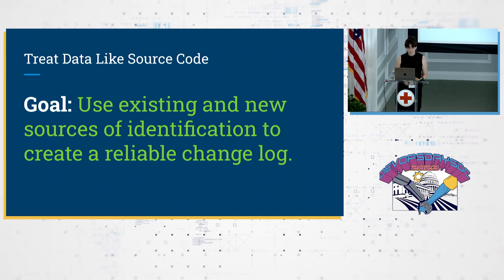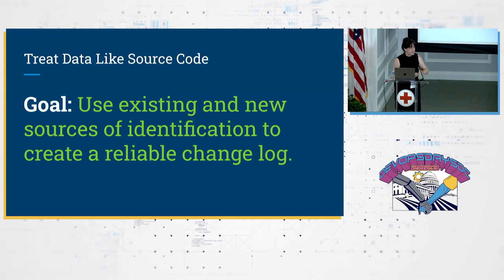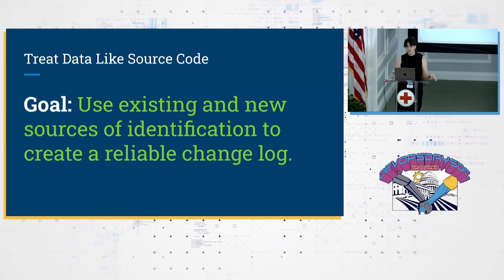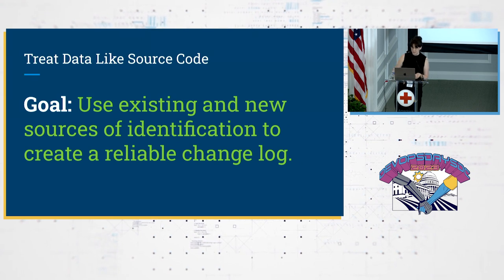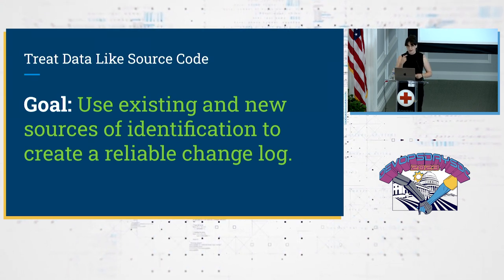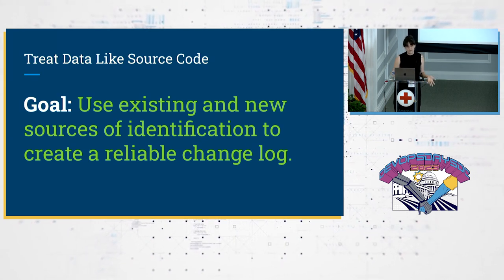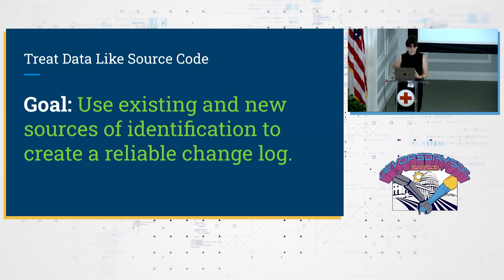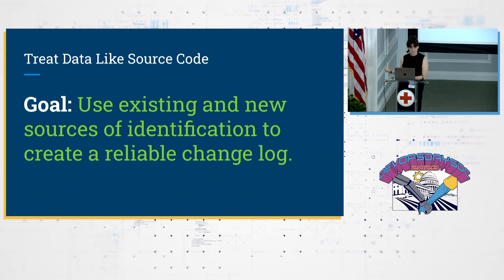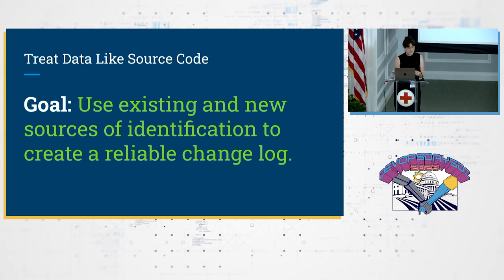This is actually the state that a lot of data teams are in all the time. When something goes wrong, they have no idea what went wrong. They have to find the person who's the expert at that particular piece of pipeline code, call the expert in, go look at the upstream data, and work backwards to figure out what happened. At the end of the day they might find a bug in their code — which is easy to fix — or they might find a problem with upstream data quality, which is a really difficult problem to deal with.